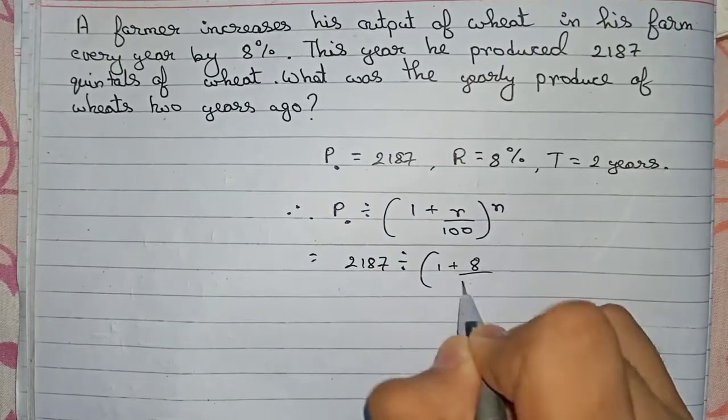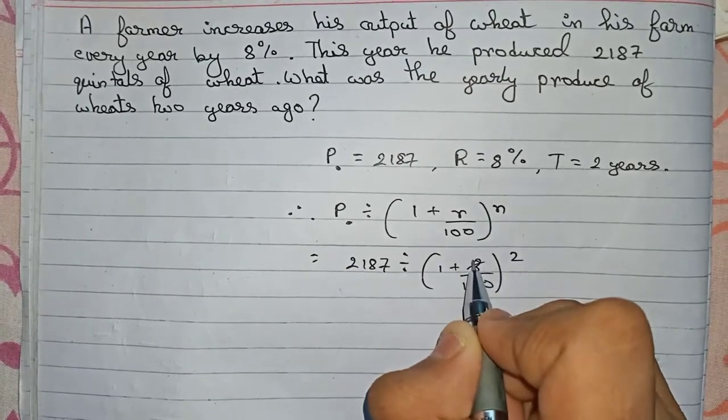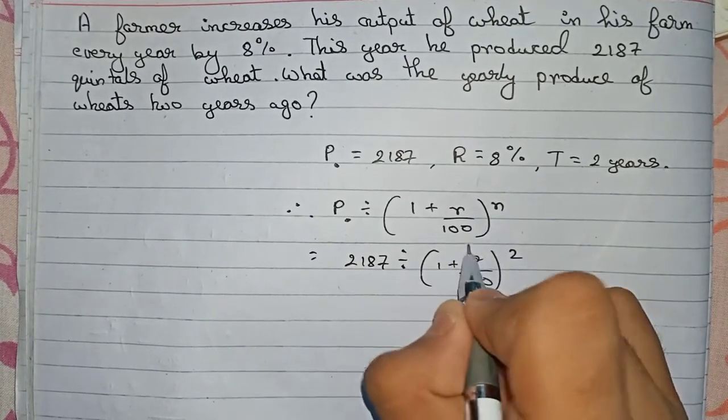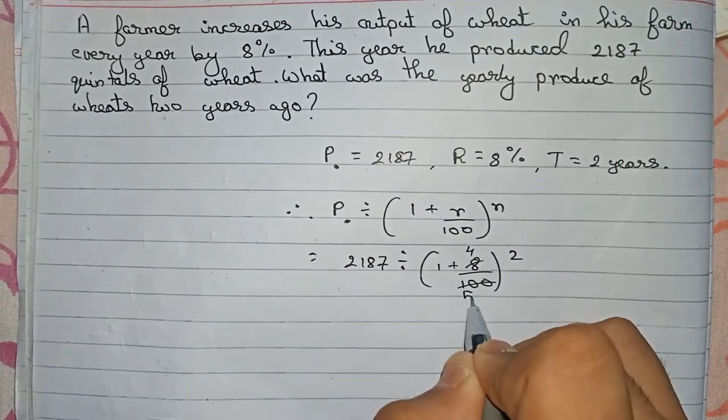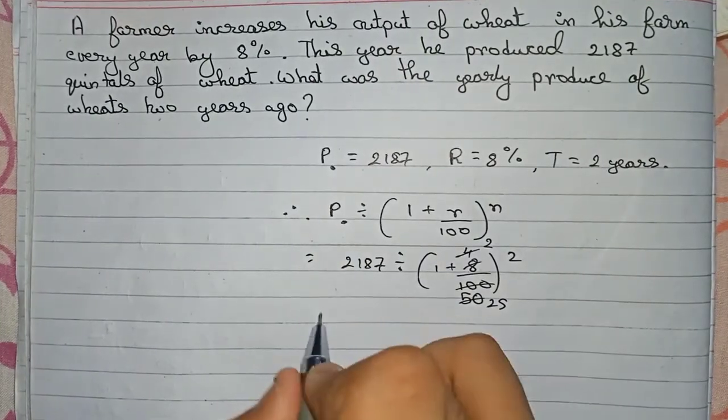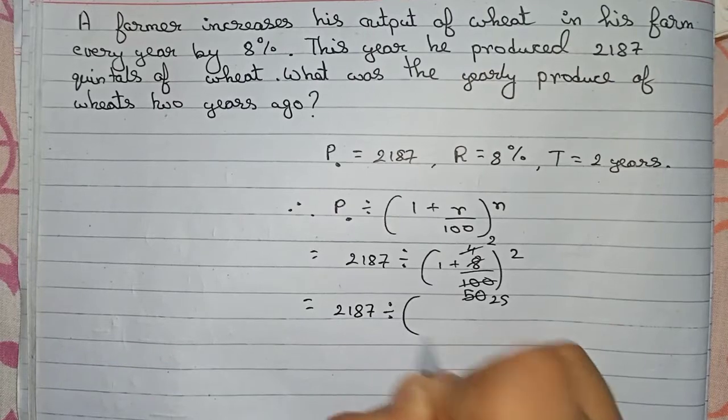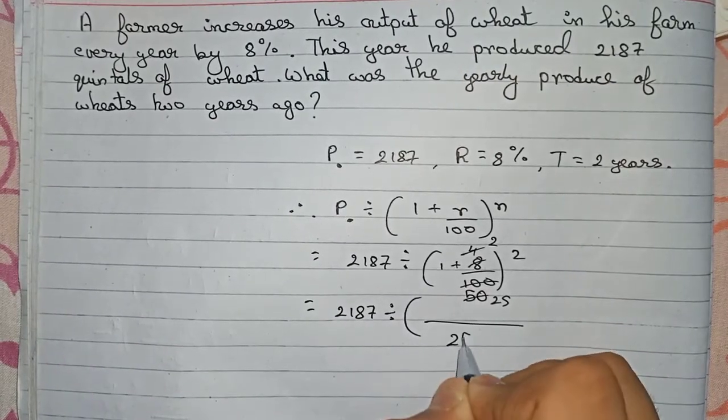See here, we can simplify 8/100. First cut by 2, so it's 4/50. And once more, 2/25, so cannot cut anymore. So 2187 divided by... You take 25 as denominator, so 25 times 1 is 25, plus 2. That's (27/25)².